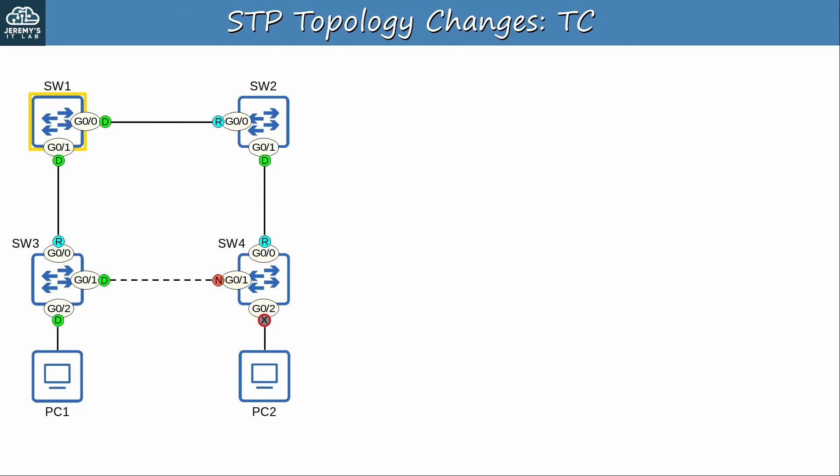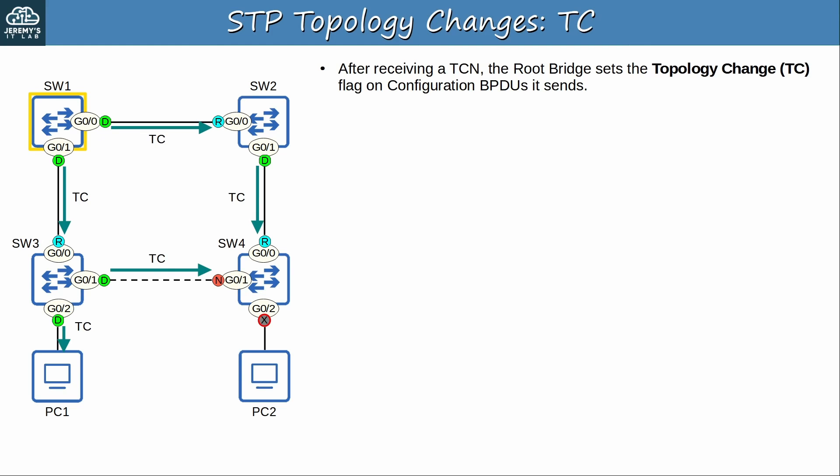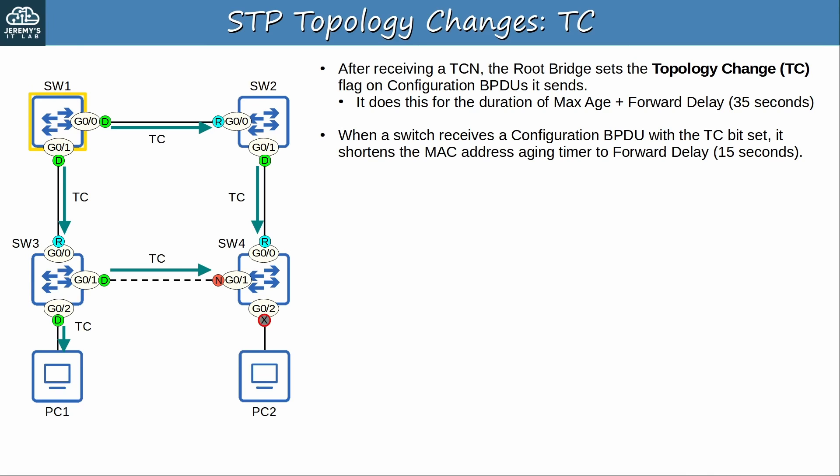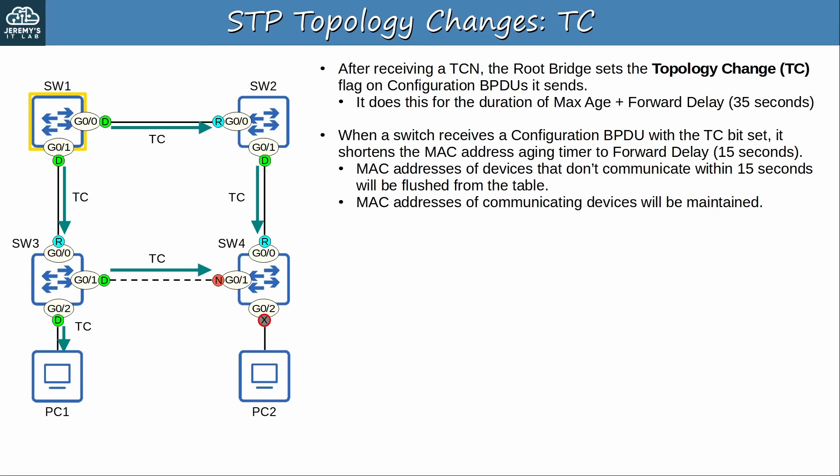So what happens after the root bridge receives the TCN? After receiving it, the root bridge sets the topology change flag on configuration BPDUs it sends, and other switches forward them as usual. The root bridge continues to set the TC flag on its BPDUs for the duration of the max age plus forward delay timer, so 35 seconds by default. This notifies all switches in the LAN that there has been a topology change. When a switch receives a configuration BPDU with the TC bit set, it shortens the MAC address aging timer to match the forward delay timer — 15 seconds by default. So MAC addresses of devices that don't communicate within 15 seconds will be flushed from the table, but MAC addresses of communicating devices will be maintained.